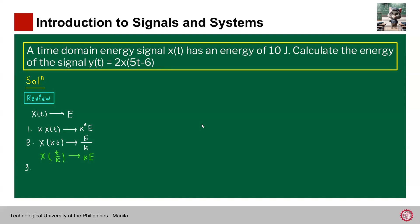Three. We have time shifting. If we perform time shifting, let's say x(t - k), what happens to the energy? It will remain as E. So energy is not affected by the time shifting operation. So these are the important results that you should remember when it comes to the operations on the independent and dependent variable and the relationship to the energy.